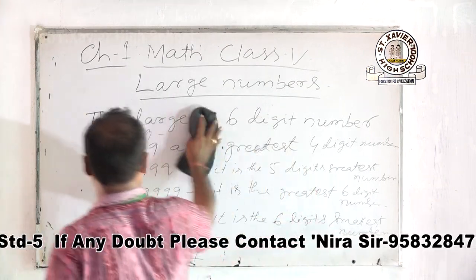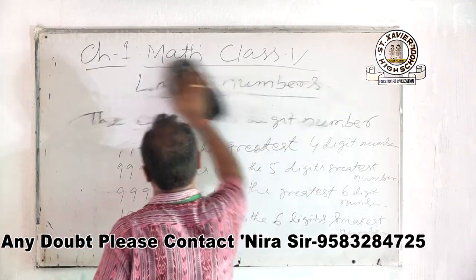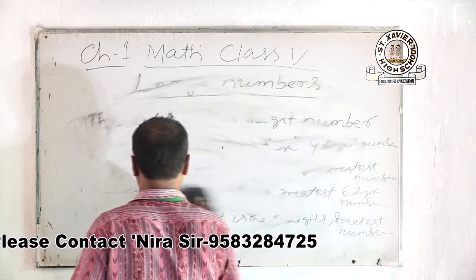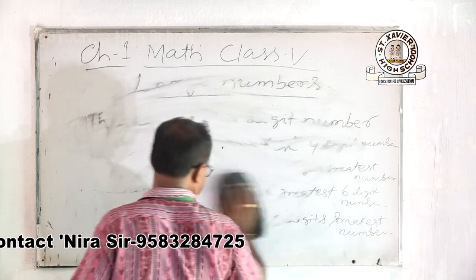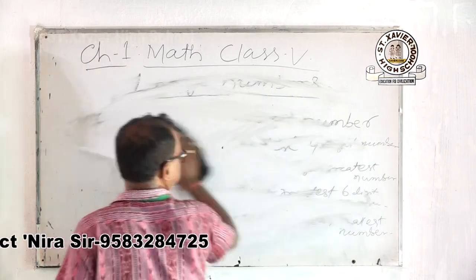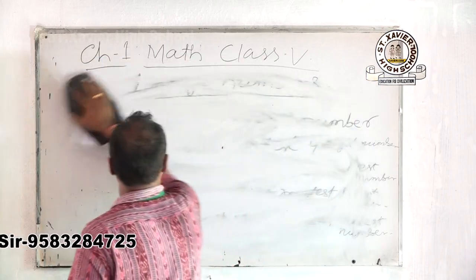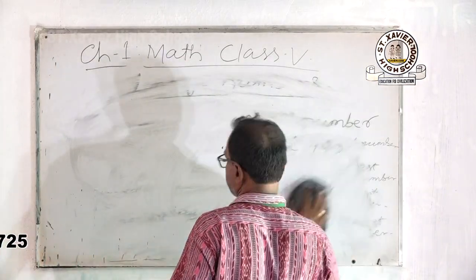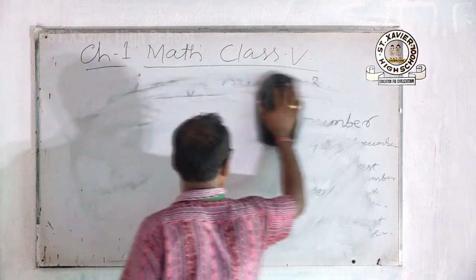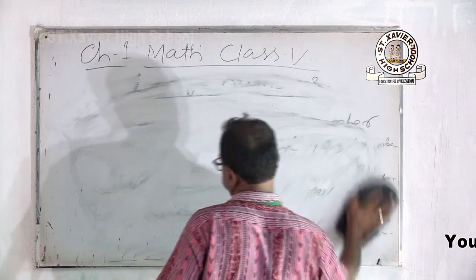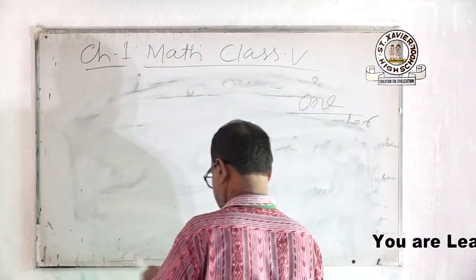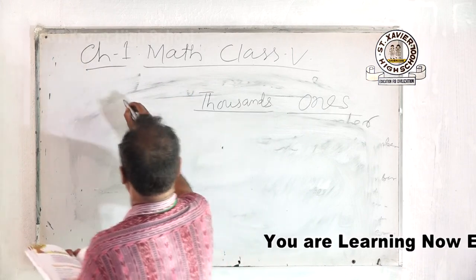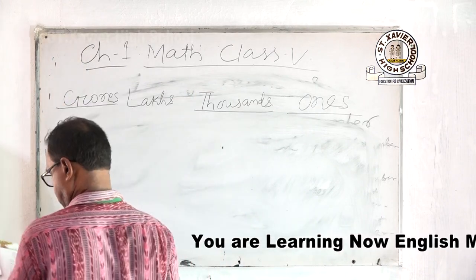If I write all this in a table, it will be very easy to write the greatest and the smallest numbers, and you will be all convenient about the large numbers of 6, 7, or 8 digits. The place value groups are: ones, thousands, lakhs, and crores.